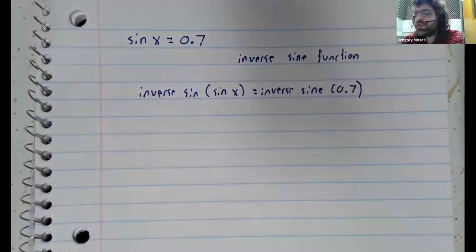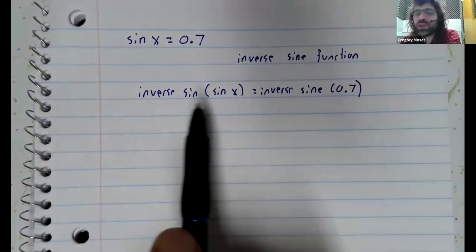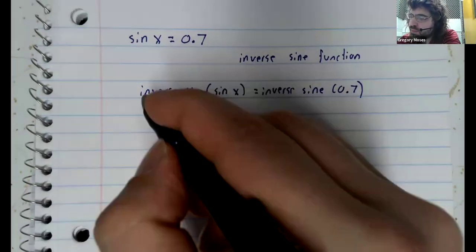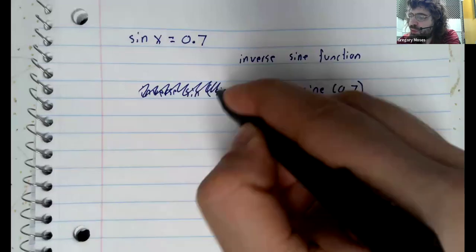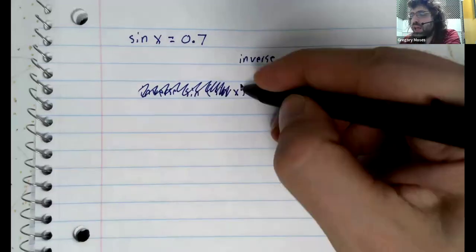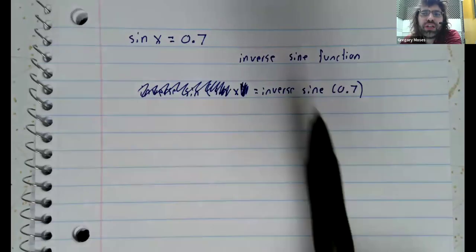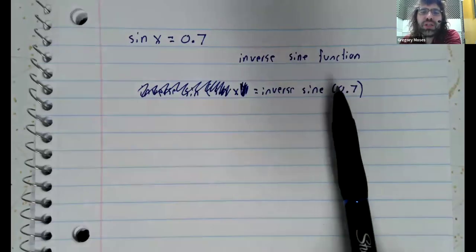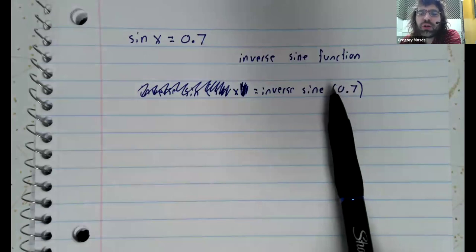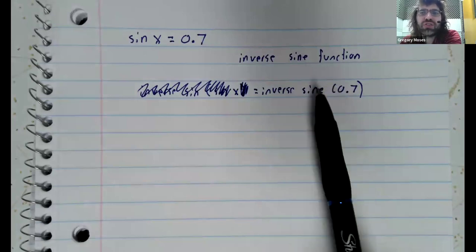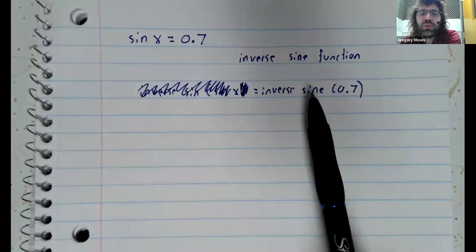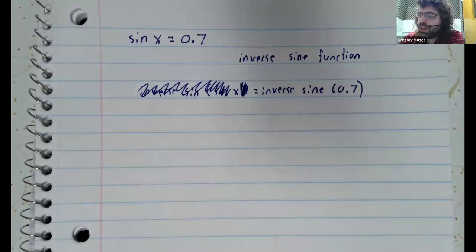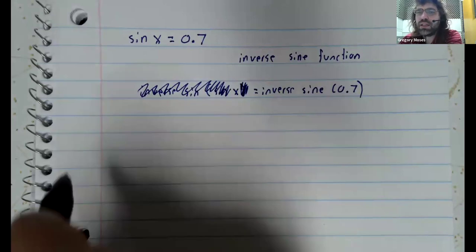On the left, the function and the inverse would cancel out and leave you with x. And then just like we went to our calculator to find the cubed root of seven, we'd go to our calculator to find the inverse sine of 0.7. That's what we'd like to do. But there's an obstacle in our way.